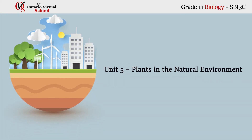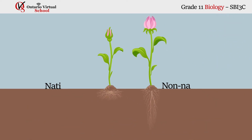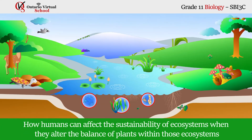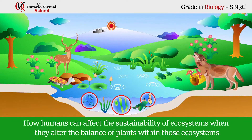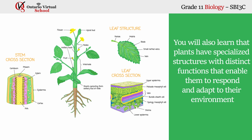Unit 5: Plants in the Natural Environment. Our ever-increasing knowledge about plant growth has been used over the years to improve pest resistance in plants, allowing them to be grown in many non-native areas. In this unit we will discuss some of the positive and negative effects of these kinds of changes and, more generally, how humans can affect the sustainability of ecosystems when they alter the balance of plants within these ecosystems. You will also learn that plants have specialized structures with distinct functions that enable them to respond and adapt to their environment.